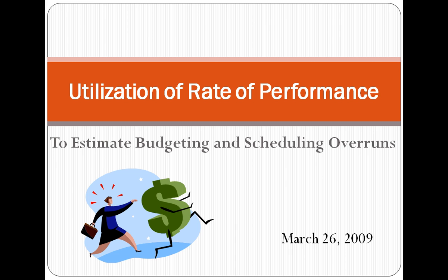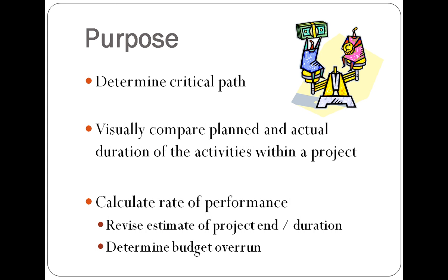Greetings. This presentation will be about utilization of the rate of performance to estimate budgeting and scheduling overruns in a project. The critical path of activities within a project will be determined. The planned and actual durations of this project will then be visualized in a Gantt chart. Finally, the rate of performance will be calculated and then used to revise the estimate of a project end date or duration and to determine the budget overrun.